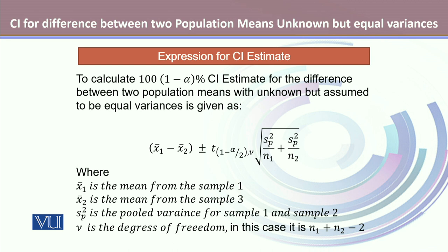Since we are assuming that the unknown population variances are equal, we calculate the pooled variance estimate, known as SP². One other point to note carefully is that here we use the t-distribution to calculate the reliability factor.